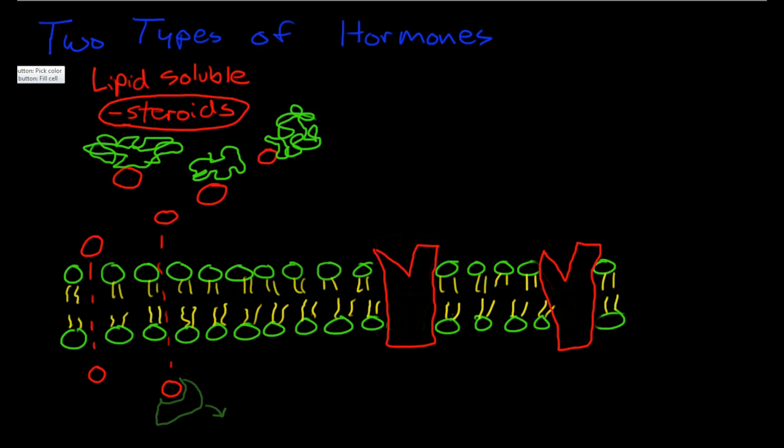Now, the other type of hormone is an amino acid derived hormone. So most of these are going to be peptides.